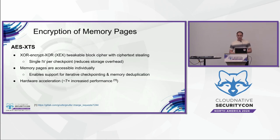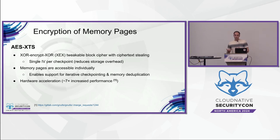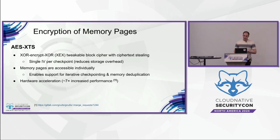For memory pages, because they are blocks of data with fixed size, it's much more efficient to use AES-XTS and use a single IV initialization vector for all memory pages instead of adding nonces for every memory page. This also allows us to modify the encrypted data without decrypting it — because the input and output have the same size, if we want to delete a memory page, we don't need to decrypt it; we know the offset of the memory page. In addition, AES-XTS has hardware acceleration, so it can be seven times faster than using software.